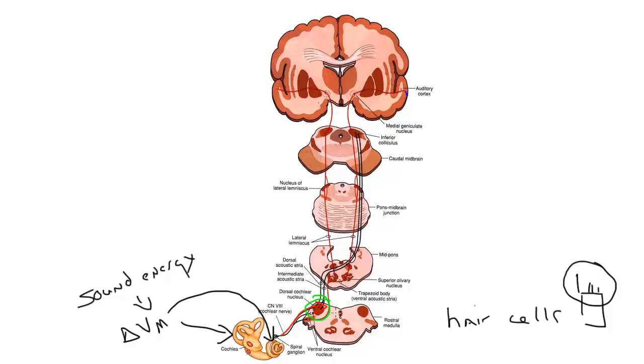What happens next is that information from the cochlear nuclei can, some of it remains ipsilateral, but some of it crosses over and goes contralateral. So there's an incomplete decussation.